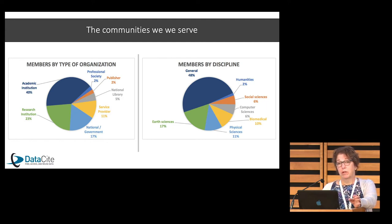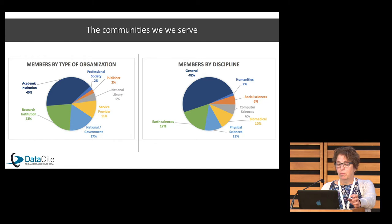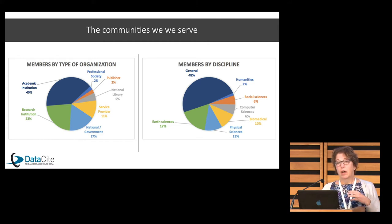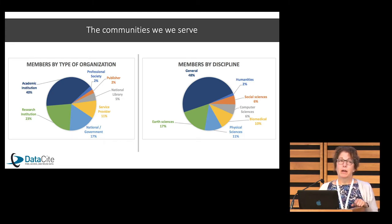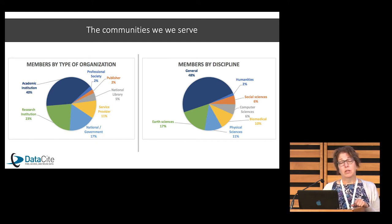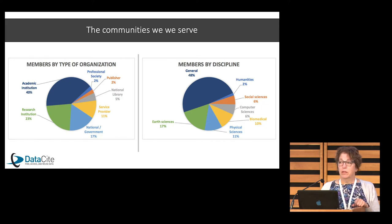We used to be almost 100% national libraries, but in the last three years our profile has really changed. Then you dig in and look at disciplines. When I say general, those are mostly the academic institutions that have a whole host of different data types. We also work a lot with the earth science community and climate change. And the fastest growing group is biomedical, which is really exciting for us.